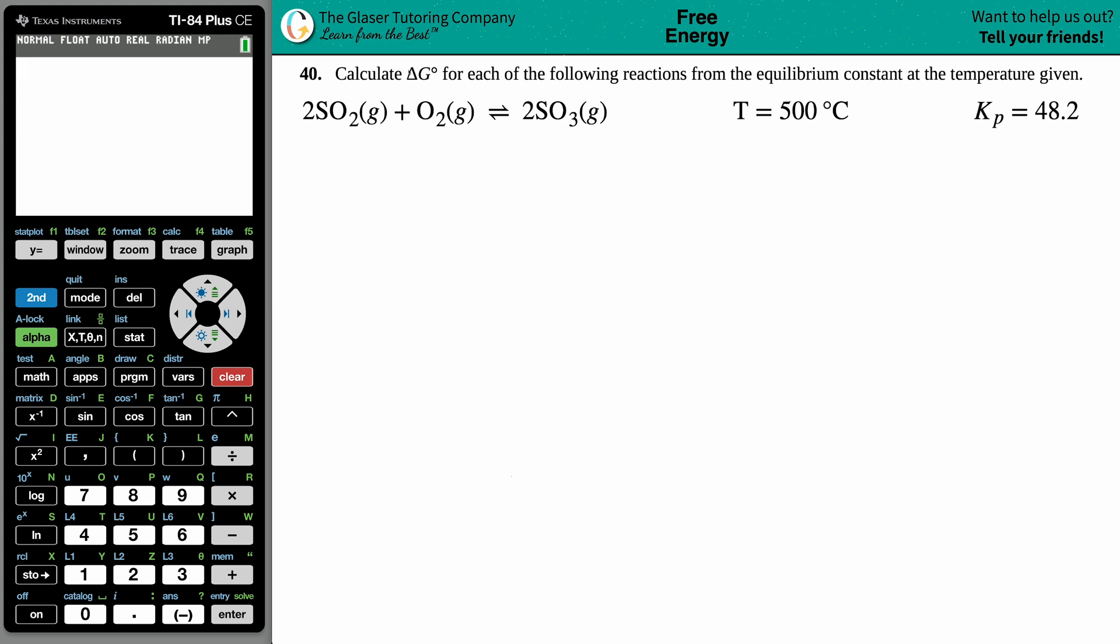Number 40: Calculate ΔG° for each of the following reactions from the equilibrium constant at the temperature given. We have 2SO₂(g) + O₂(g) yields 2SO₃(g). They give me a temperature of 500°C and a Kp value of 48.2.